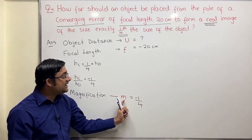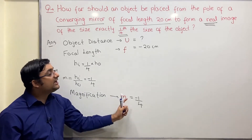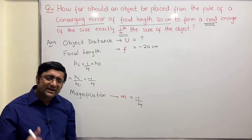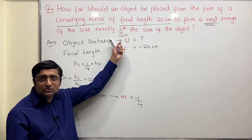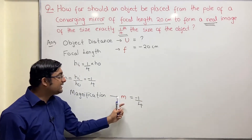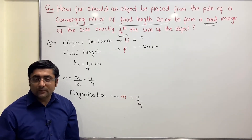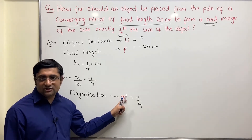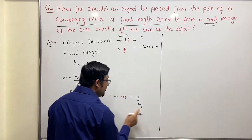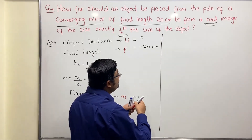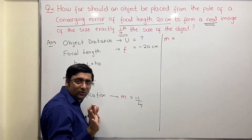So u, f, and m are the three parameters, of which u is unknown — only f and m are given. Can I apply mirror formula 1/v + 1/u = 1/f? I can't, because neither u nor v is known. Can I apply magnification formula -v/u? Again, v and u are both unknown. So whenever magnification is given, start with the magnification formula.